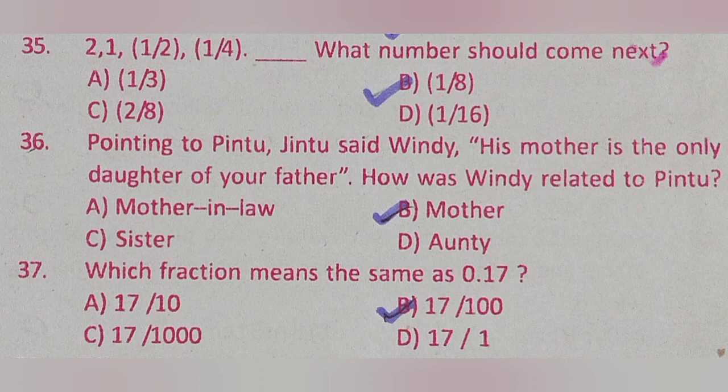Question 35: 2, 1/2, 1/4 — what number should come next? Option A: 1/6, Option B: 1/8, Option C: 2/8, Option D: 1/16. The correct answer is Option B: 1/8.